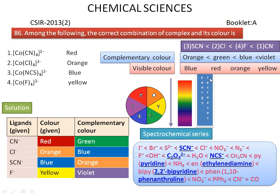Now we check these results with the given options. For the cyano complex, the color should be yellow, but the option gives red, so it is not correct. For the fluoro complex, it should be orange, but the option gives blue, so it is not correct. For the chloro complex, it should be red, but the option gives orange. For thiocyanato, it gives blue, and the option also gives blue.